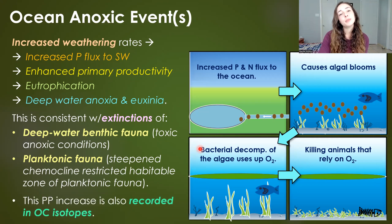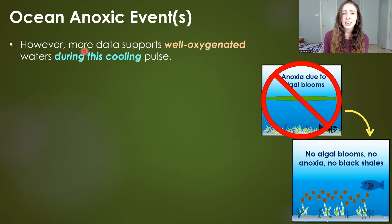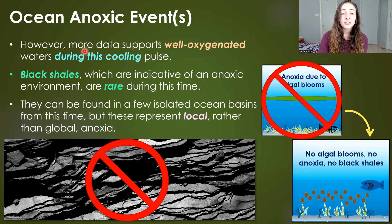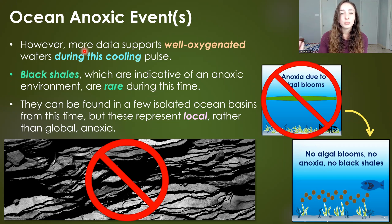This primary productivity increase is also recorded in organic carbon isotopes in the rock record. However, more data actually supports well-oxygenated conditions than anoxic conditions during this cooling pulse. This is mainly because black shales, which are indicative of anoxic conditions, are rare during this time, and where they are found they represent more local anoxic conditions rather than global anoxia and widespread extinctions due to oxygen limitation.